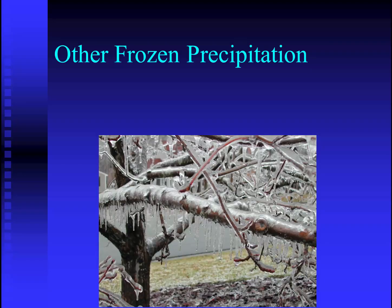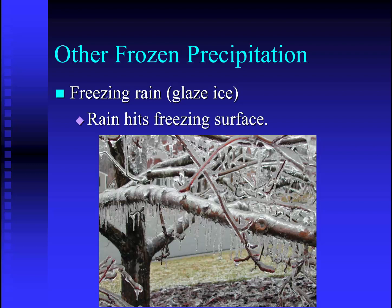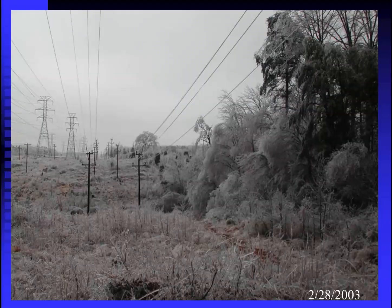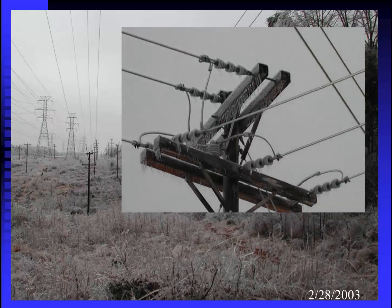Another form of frozen precipitation is one that we hate here in the Piedmont of North Carolina — freezing rain. These are the common ice storms, sometimes referred to as glaze ice. These occur after several days of cold weather when rain hits a freezing surface. Many people will not forget the severe ice storm in February of 2003. Ice built up on all the trees and the utility lines — power lines became encrusted with ice and became so heavy that they broke, or sometimes trees became so heavy that they fell down on the power transmission lines. Many people were without power for over a week.